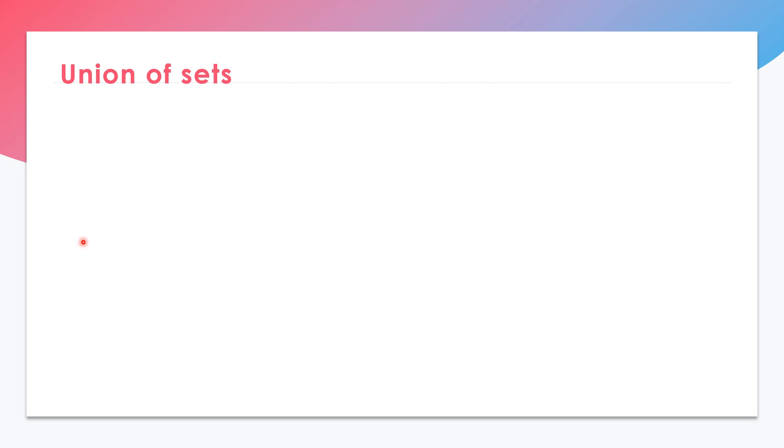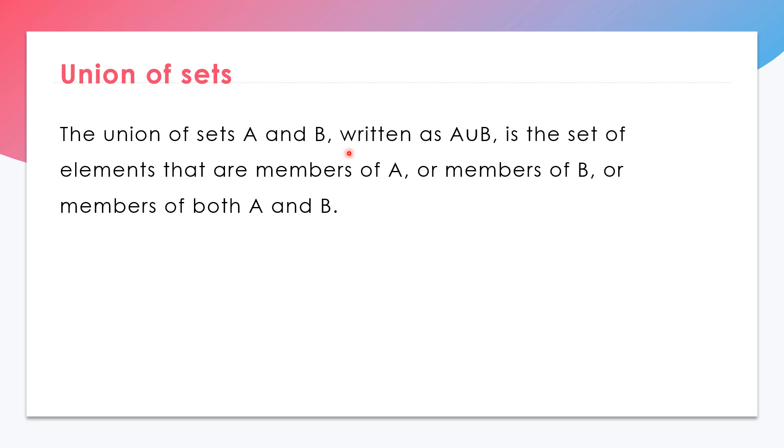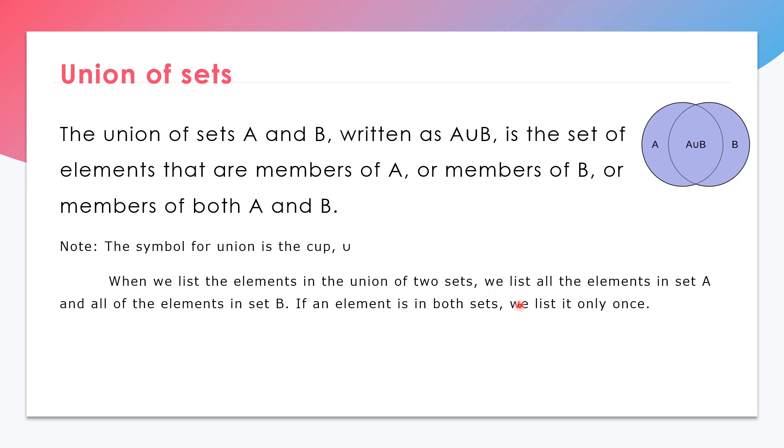Union of sets: The union of set A and B, written as A cup B or A ∪ B, is a set of elements that are members of A or members of B or members of both A and B. If we're going to write it in a Venn diagram, we have two circles combined showing A union B. The symbol for union is the cup. When we list the elements in a union of sets, we list all elements in set A and all elements in set B. If an element is in both sets, we list it only once.